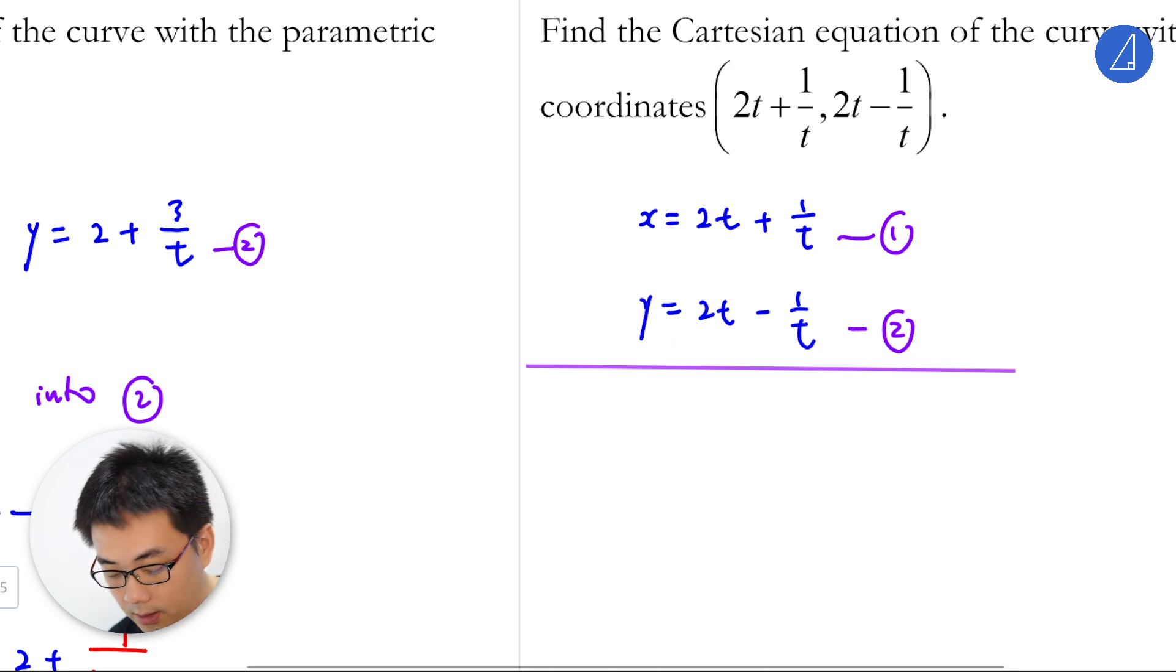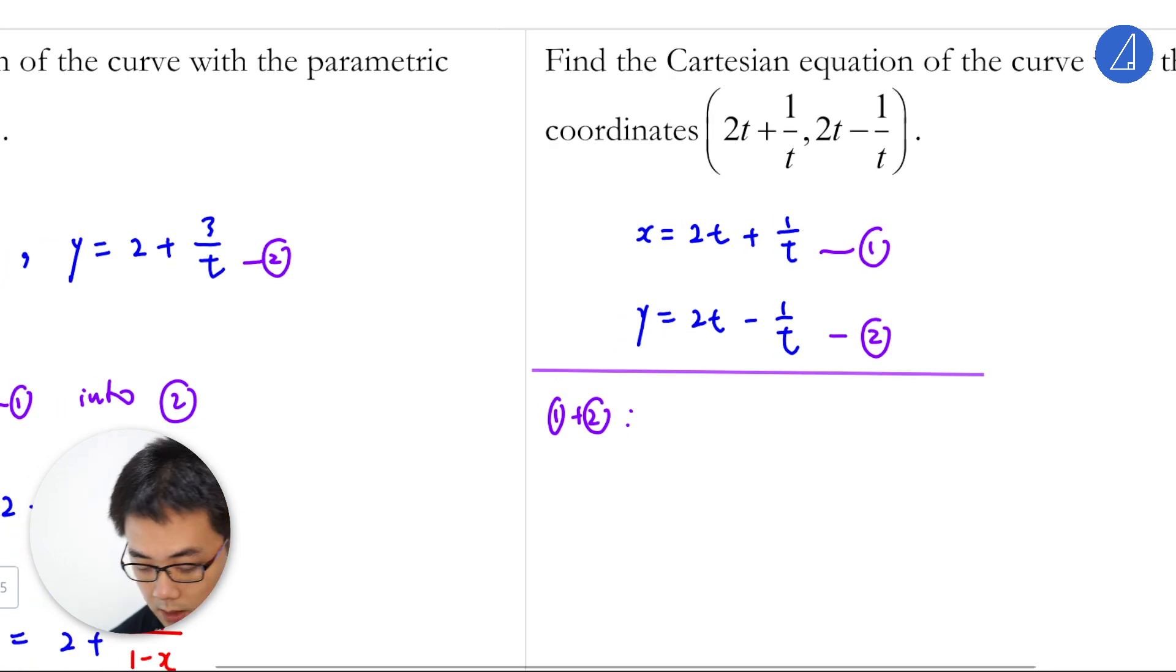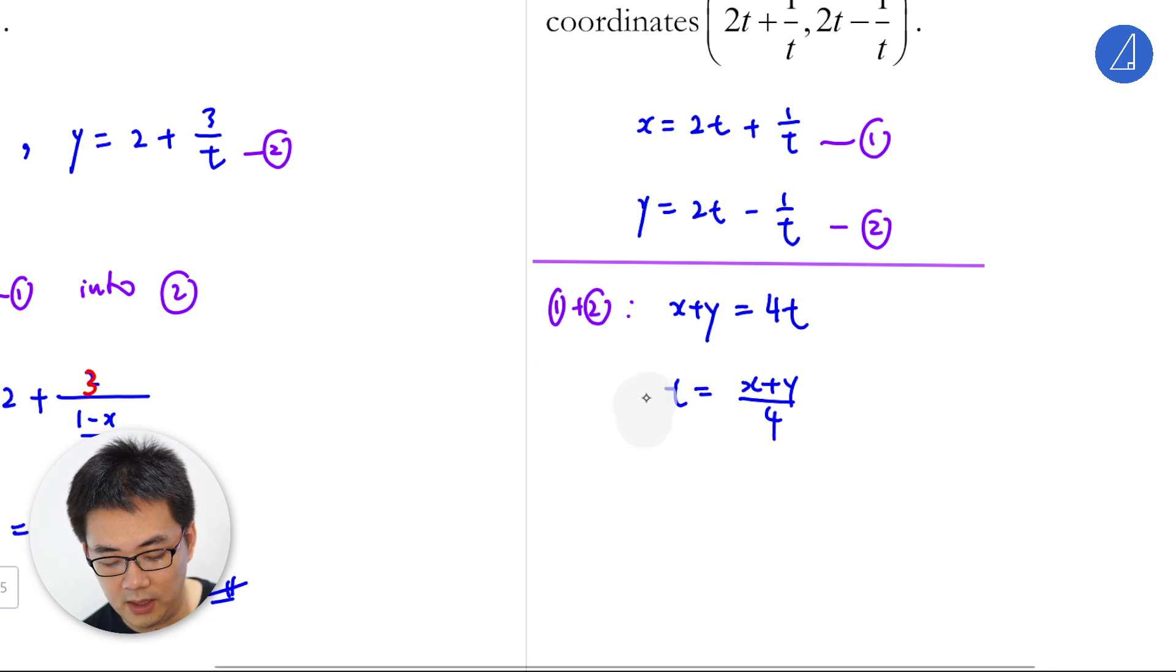So x plus y equals 4t. Then t equals x plus y over 4. The lesson here is just make, by any means necessary, make t the subject.